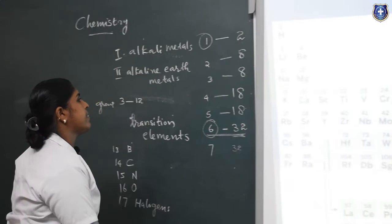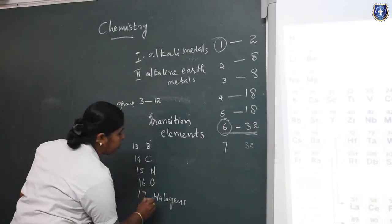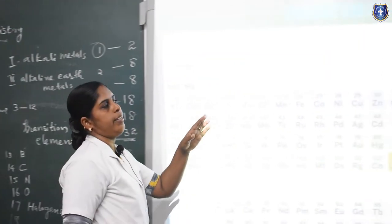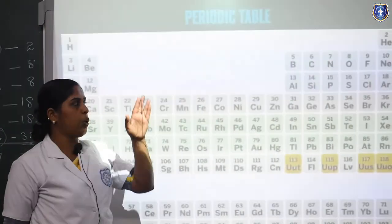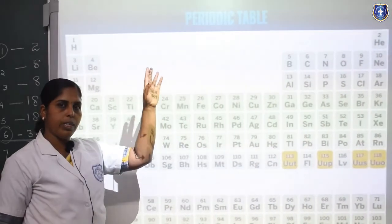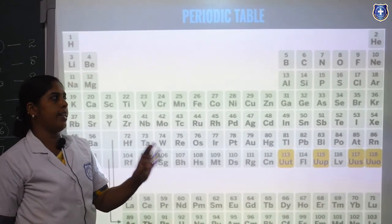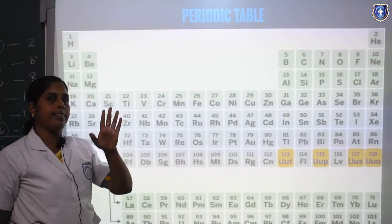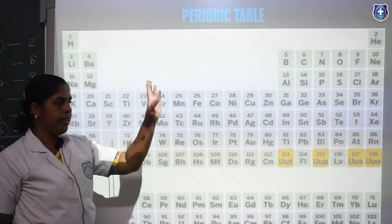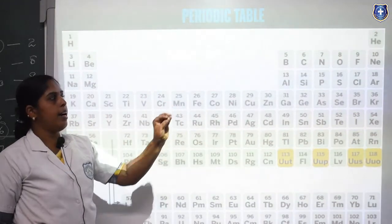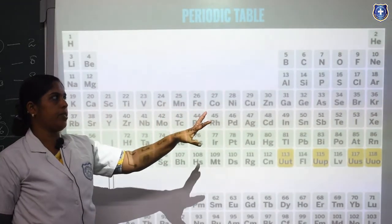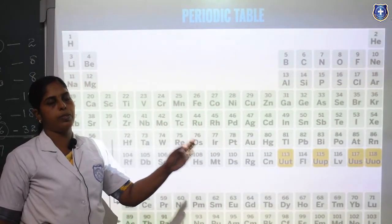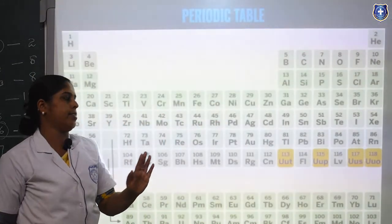The last group — the 18th group elements — are known as inert gases or noble gases because they do not react with any other elements. Their valence shell is completely filled, so there is no reaction. They are the 18th group elements, also called zero group elements, noble gases, or inert gases.